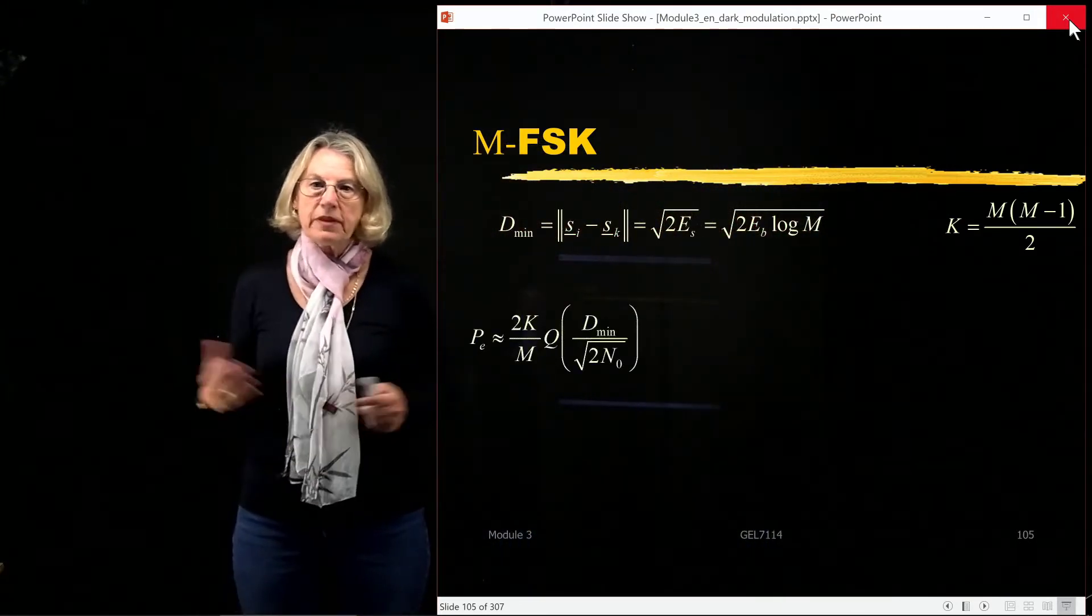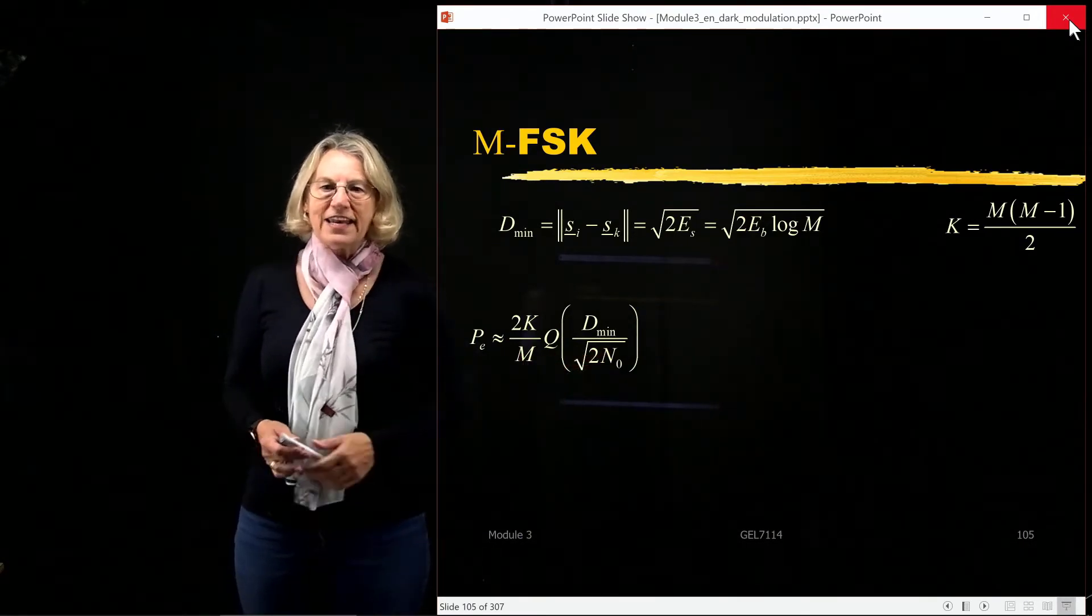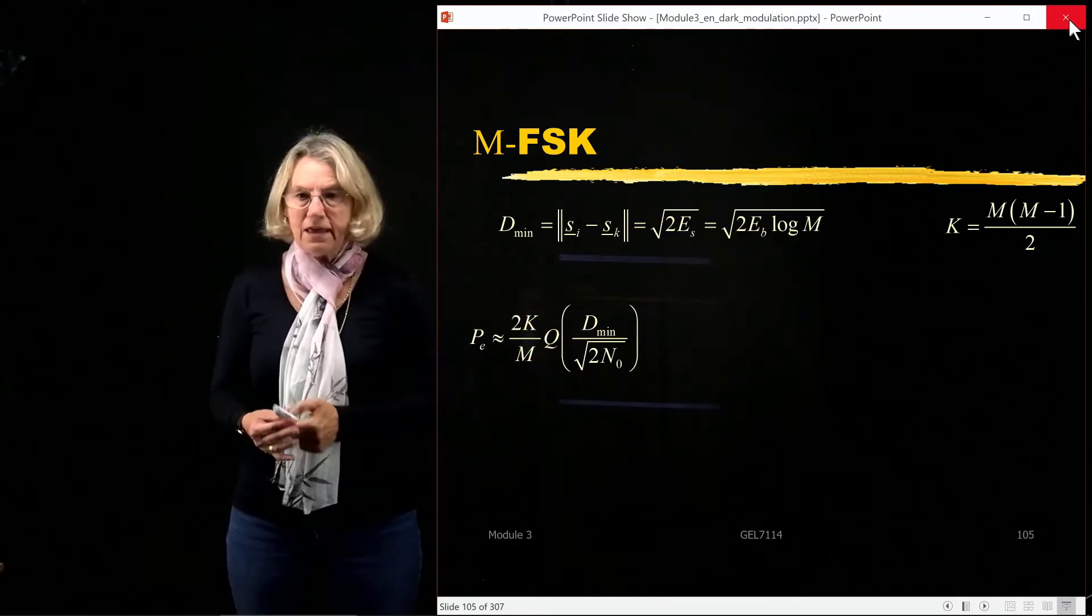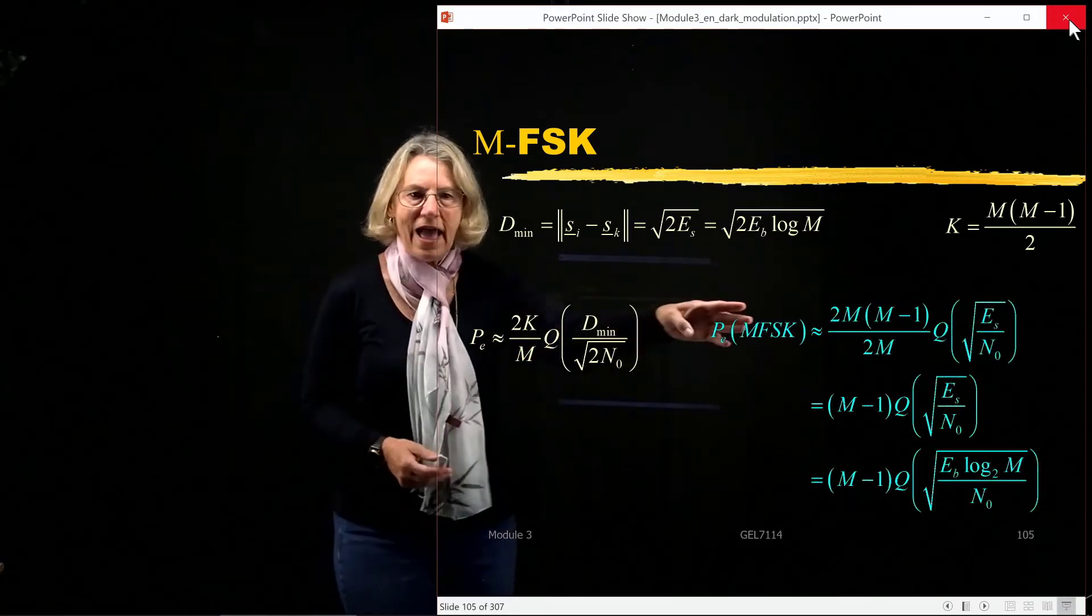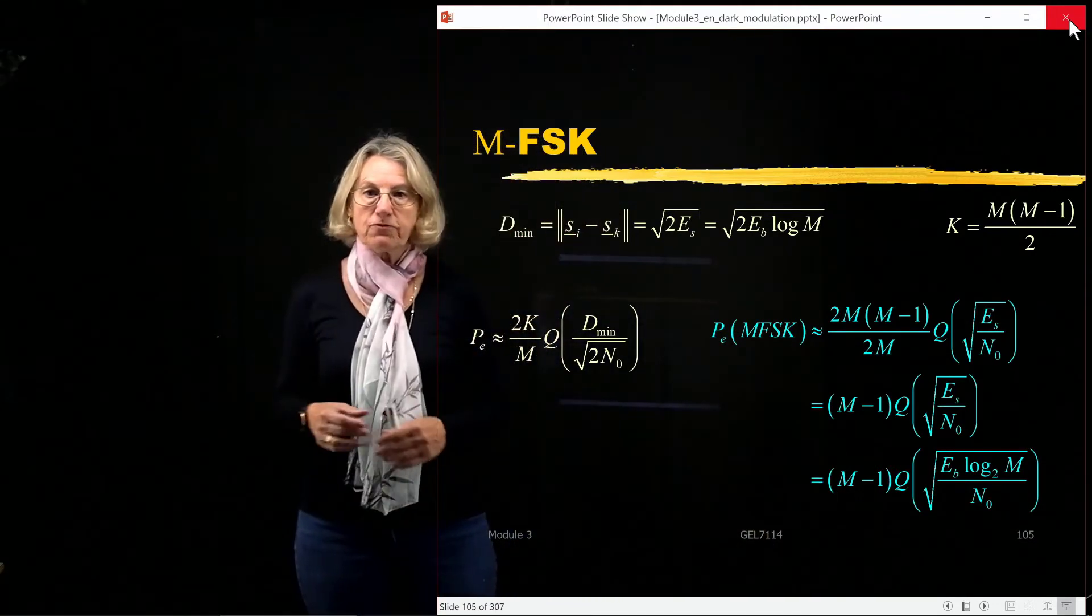I can get an approximation for the probability of error that comes from the union bound. This is my general equation, and now I plug in the value for d_min, and I plug in the value for k,